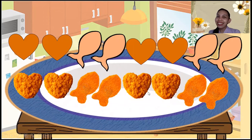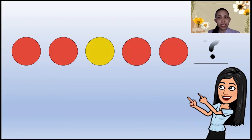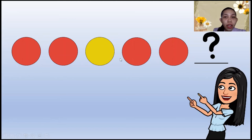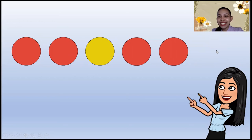I want to know if you really did understand how the pattern goes. What do you think is next? Red, red, yellow, red, red — what do you think is next? Do you think it's red or yellow? Good job! It's color yellow because the pattern is: red, red, yellow, red, red, yellow.